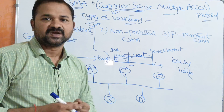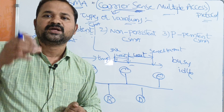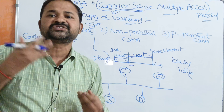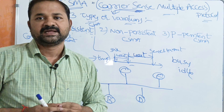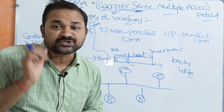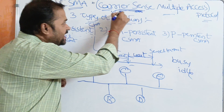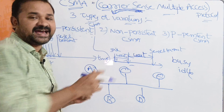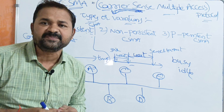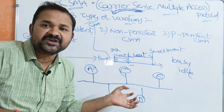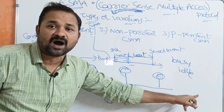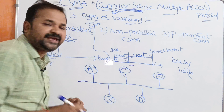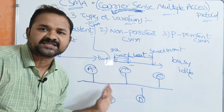The basic principle of CSMA is: if any station wants to transmit data, it must first sense the carrier. Before transmitting, the station checks whether the communication channel is busy or idle. For example, assume station A wants to send data to E, and E wants to send data to A.